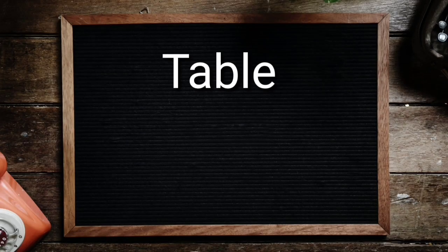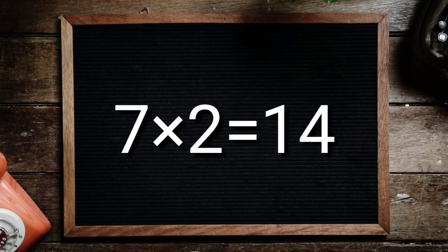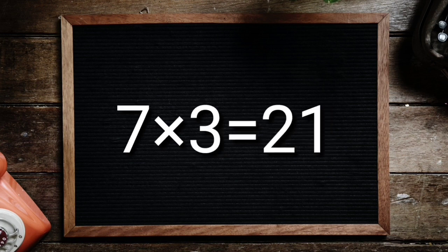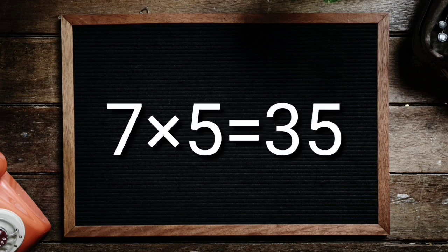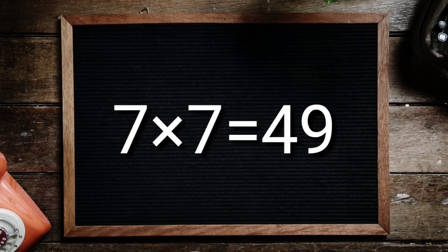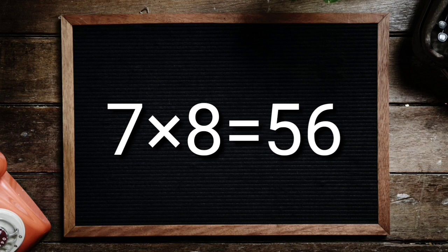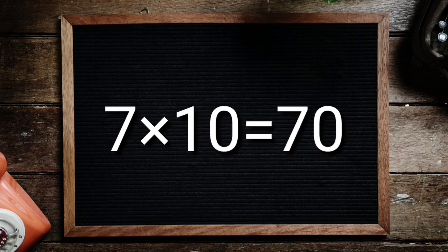Table of 7. 7 1's are 7, 7 2's are 14, 7 3's are 21, 7 4's are 28, 7 5's are 35, 7 6's are 42, 7 7's are 49, 7 8's are 56, 7 9's are 63, 7 10's are 70.